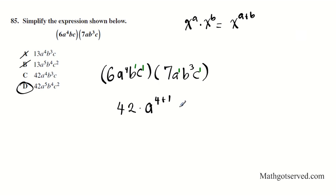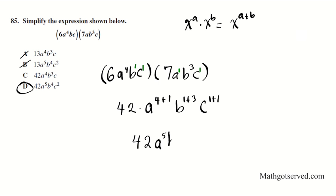Setting up the full expression: b to the 1 plus 3 gives b to the 4th, and c to the 1 plus 1 gives c squared. So we have 42a to the 5th, b to the 4th, c squared — which matches option B.